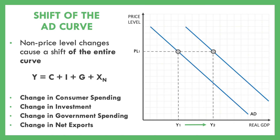The key is that these shifts happen without a price change. For example, consumers might have more disposable income and just buy more stuff even though prices haven't changed. Or the government might set a higher budget, increasing government spending. In both cases, prices didn't change — it's just that at those same price levels, there's now more of everything being demanded within the economy.